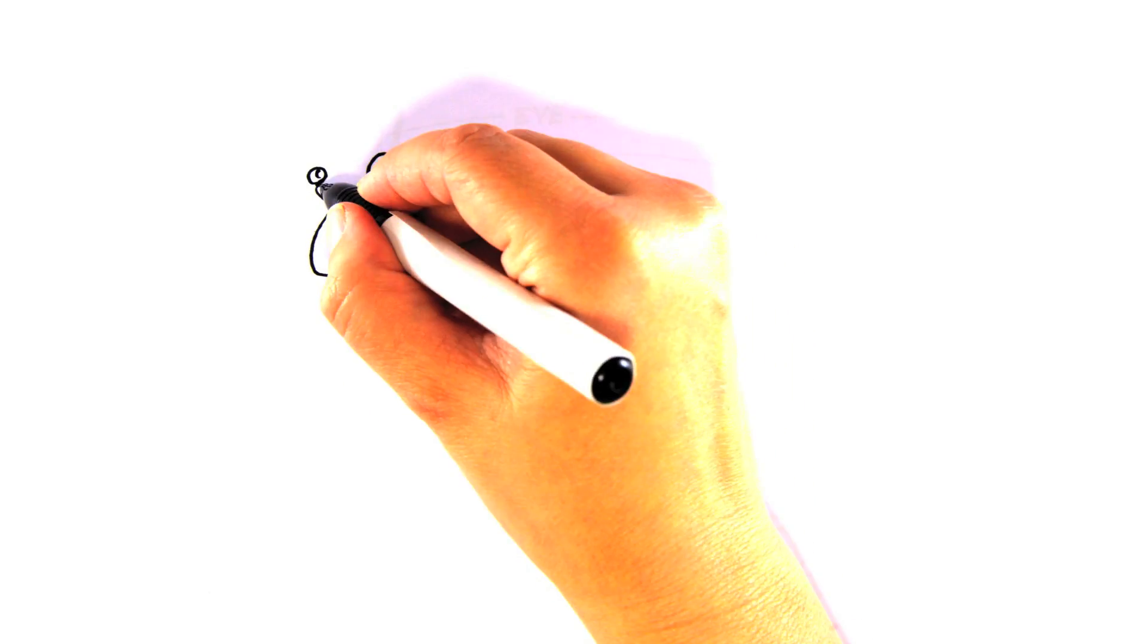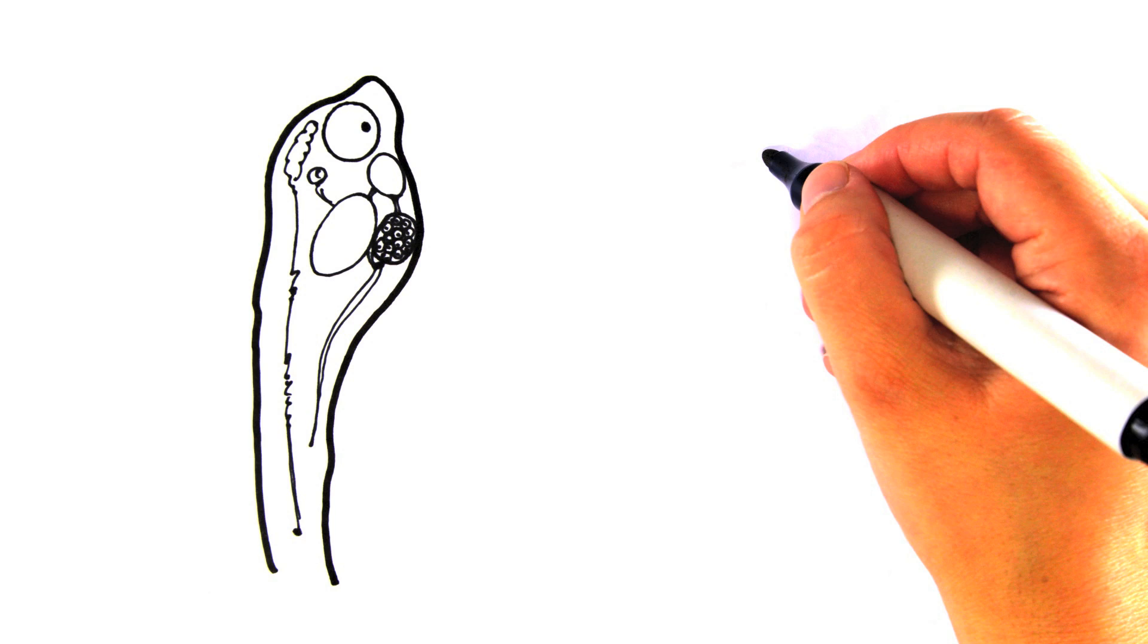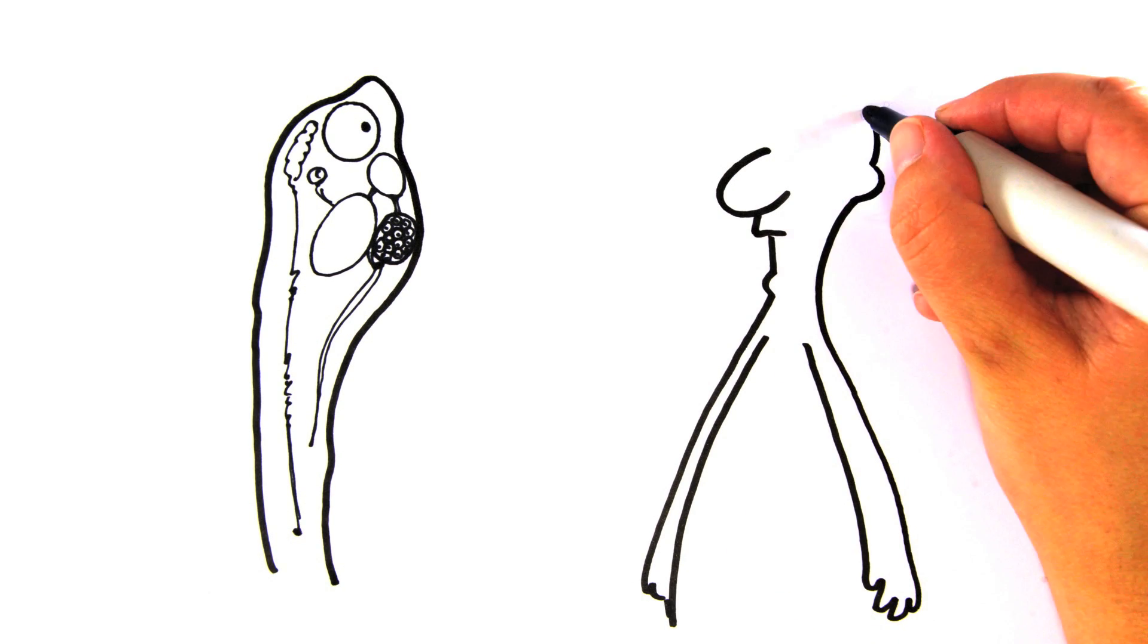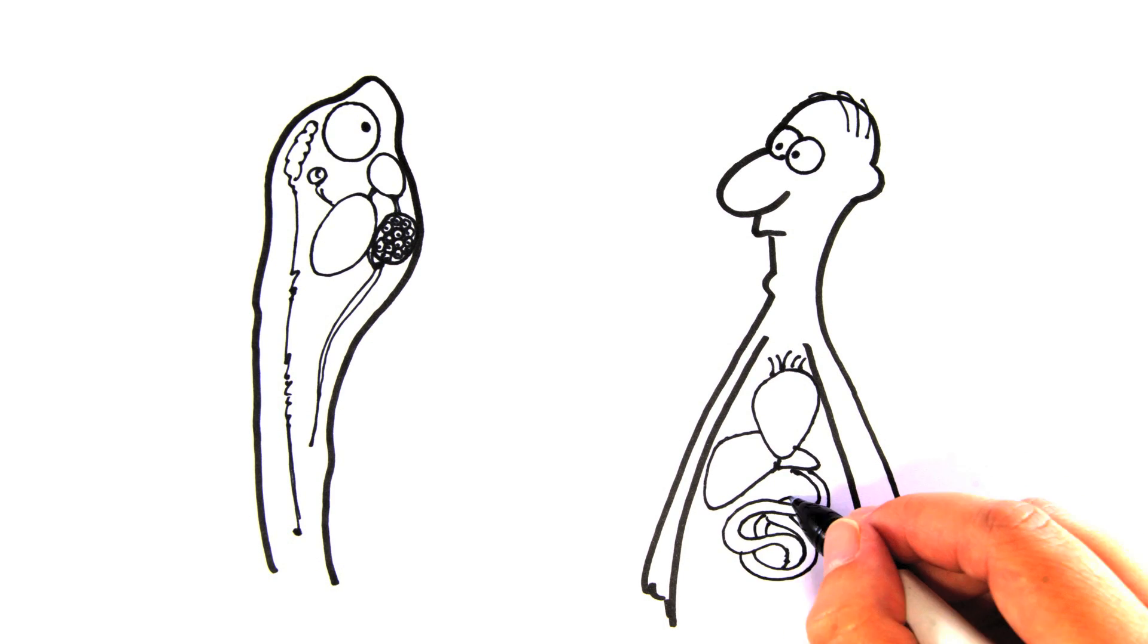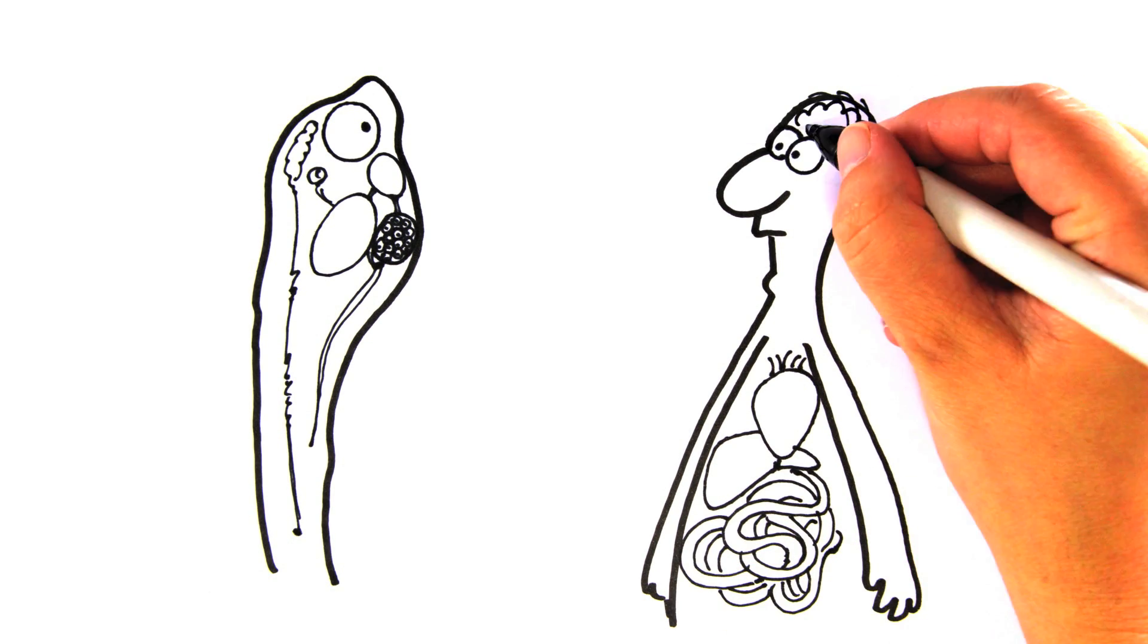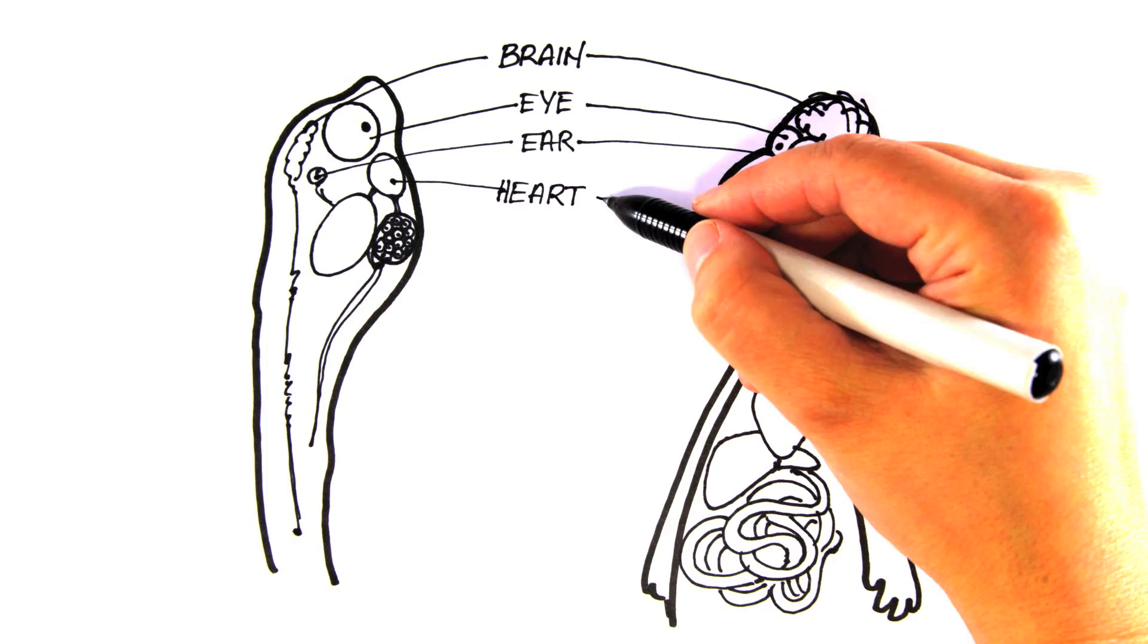Instead of testing potential drugs for efficacy or safety on cultured cells, as is common today, zebrafish offer those cells within a working organ. And that organ can interact and communicate with all other organs around it, creating a multi-organ culture model with a similar body plan and functional structure as a human being.